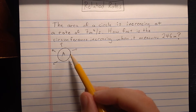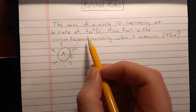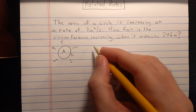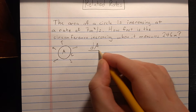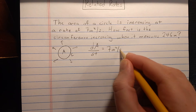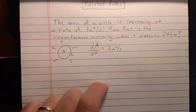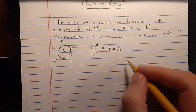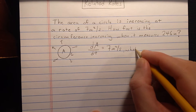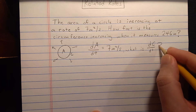Now that I have the diagram and I've identified some quantities that are changing with time, let's look more closely at the statement. The area of the circle is increasing at a rate of 7 meters squared per second. In terms of A, that means the rate of change of A with respect to time, or dA/dt, is 7 meters squared per second, and the problem suggests that's constant. On the other hand, the rate of change of the circumference may not be constant. What we're interested in is: if dA/dt is 7, what is the rate of change of the circumference, or dC/dt?